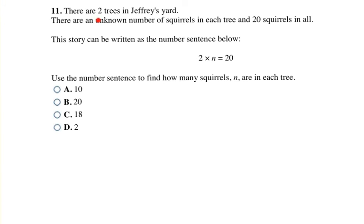This question says there are two trees in Jeffrey's yard. There are an unknown amount of squirrels in each tree and 20 squirrels in all. This story can be written as the number sentence below: 2 times N equals 20. Use the number sentence to find how many squirrels N are in each tree. So once again, they just gave us this word problem and connected it to this equation, and they're asking us to solve for N.